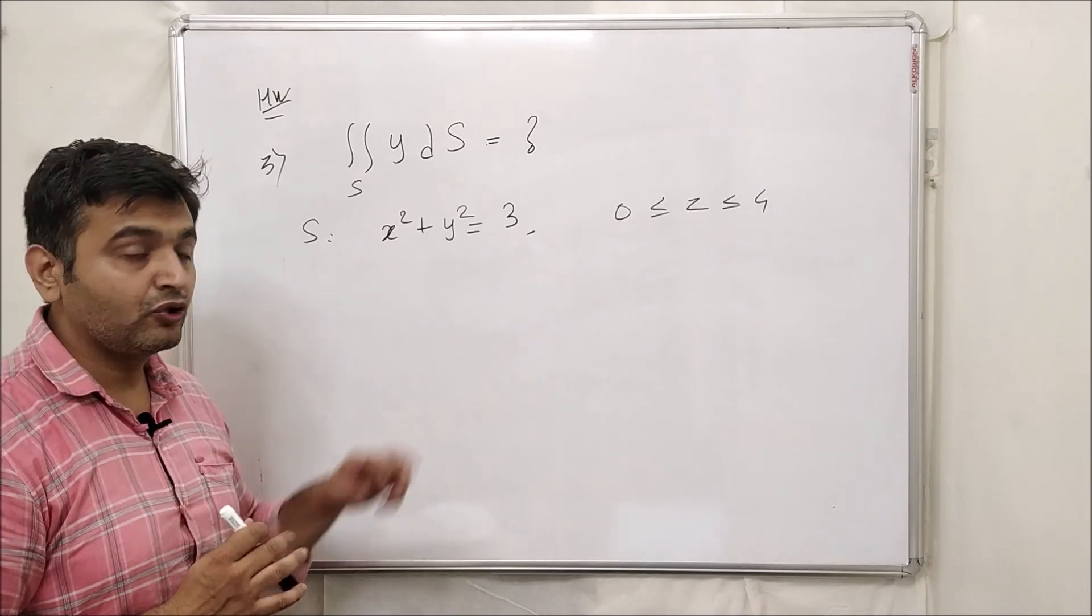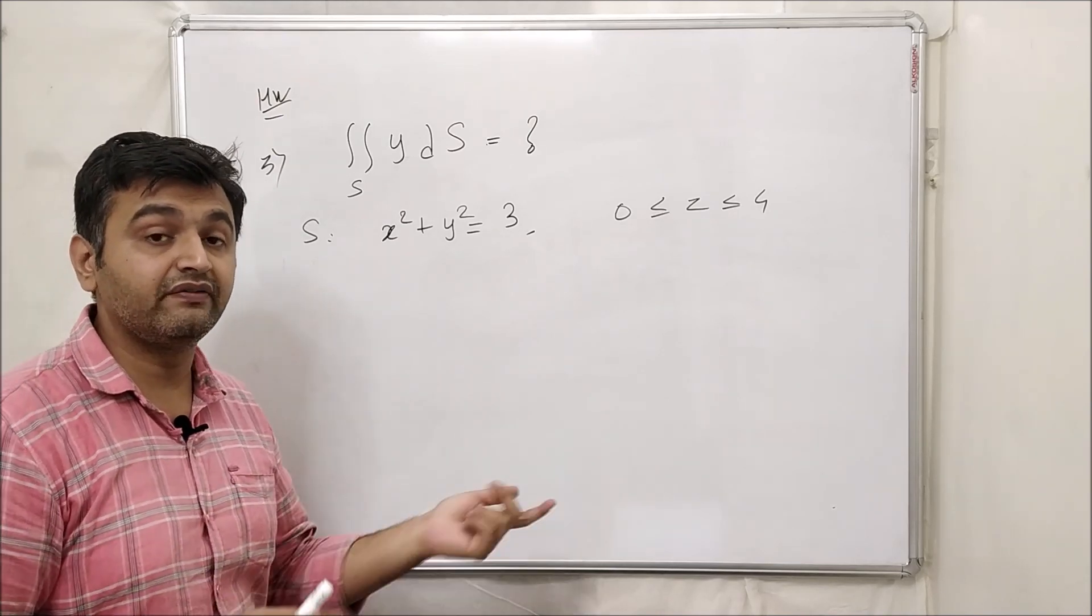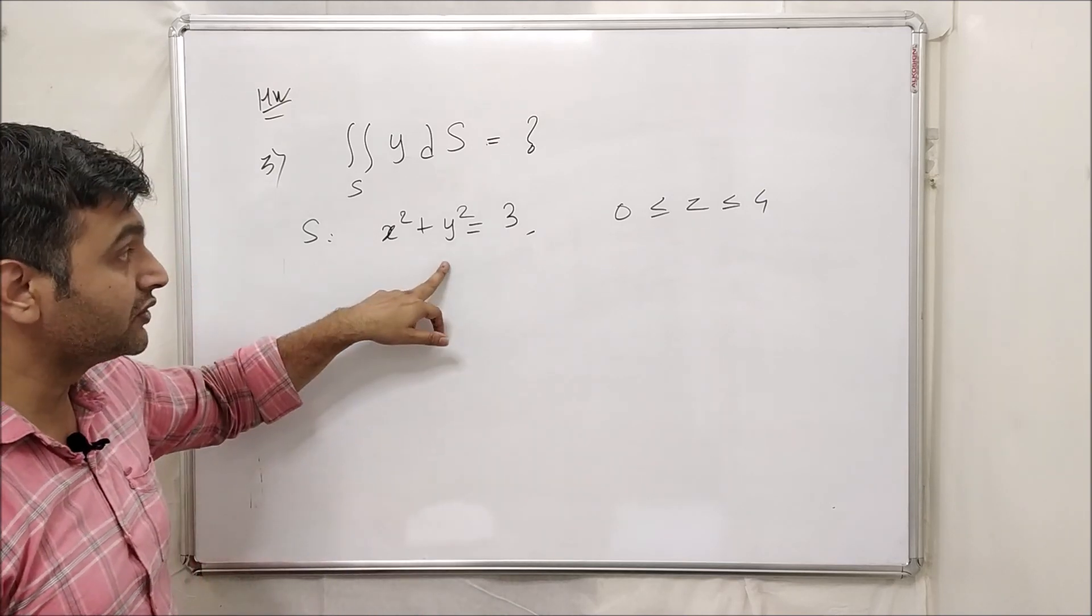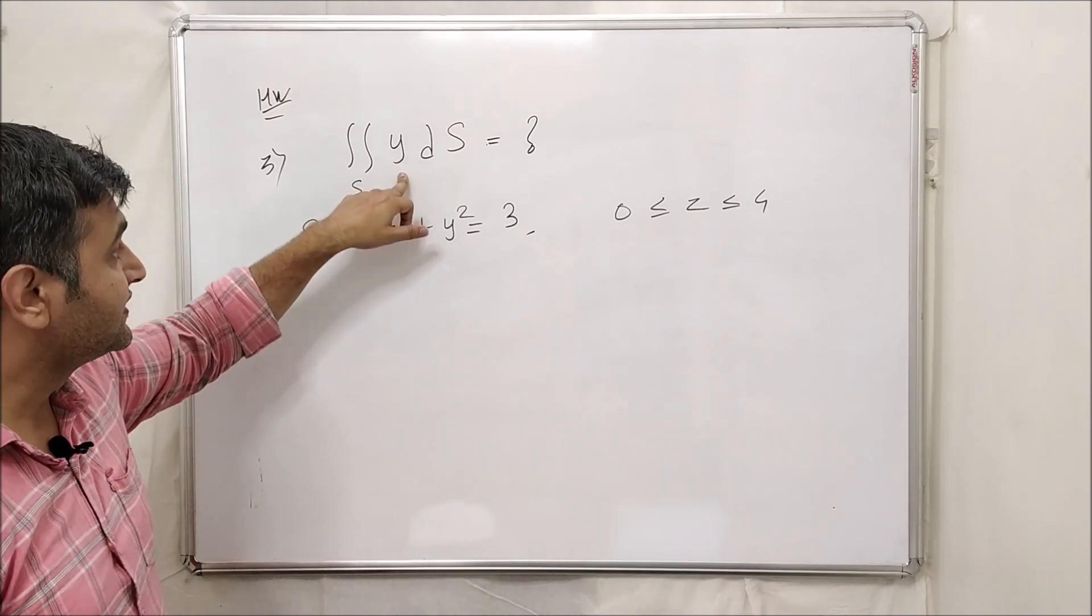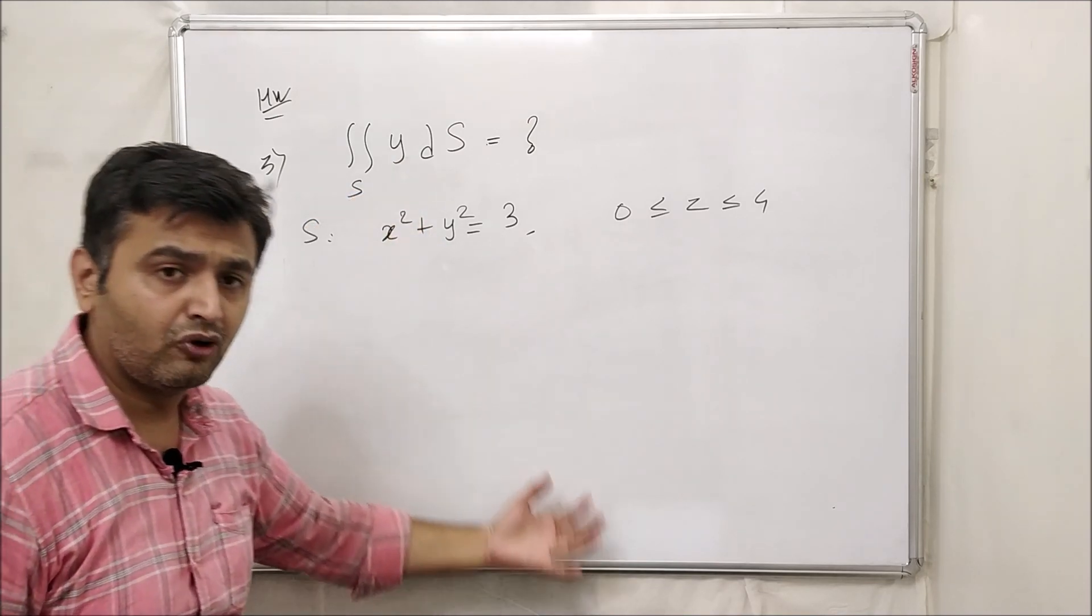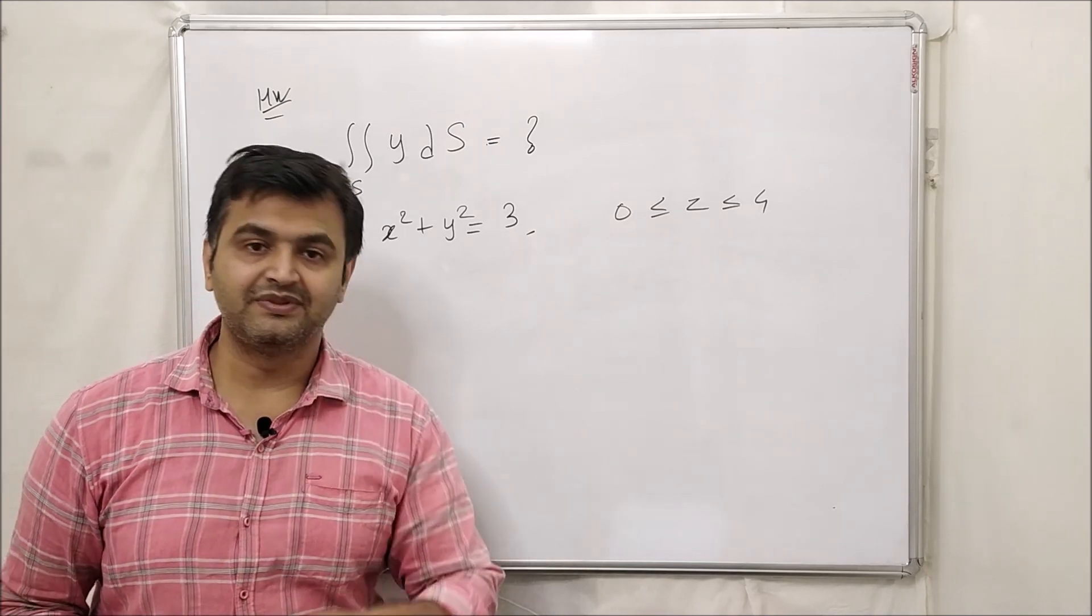Now let me give you some homework problems. So let me give you only one homework problem, but I have written number three over here. Why? Because you have to tell me the answer for previous two questions as well. So tell me the answer for previous two questions, and this is the third one. So it's a cylinder, it's a scalar field. So here you have y, so do the parameterization, find the normal vector, mod of normal vector, and tell me the final answer in the comment section.